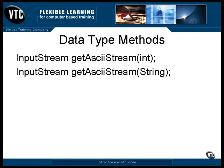You can return the data in its ASCII form. The input stream object can be read to retrieve an ASCII form of the data. Many relational databases store all their internal data, no matter what the type, as a string, and these methods simply return that string.